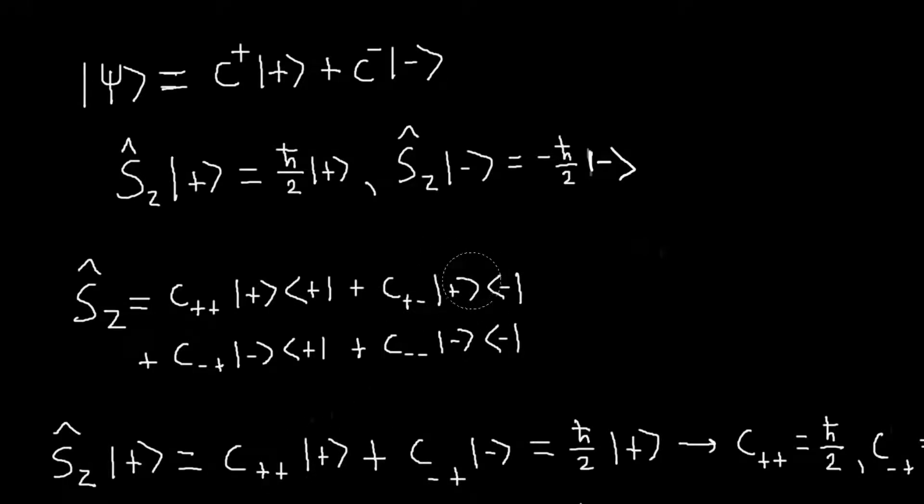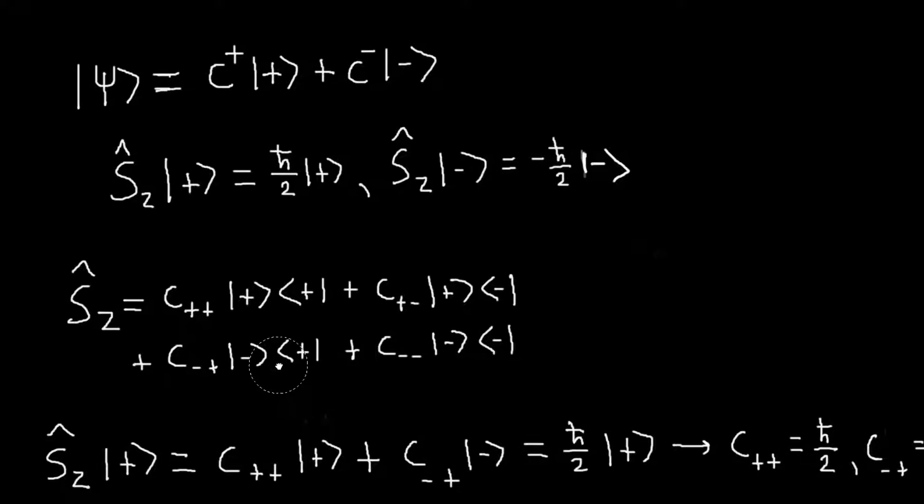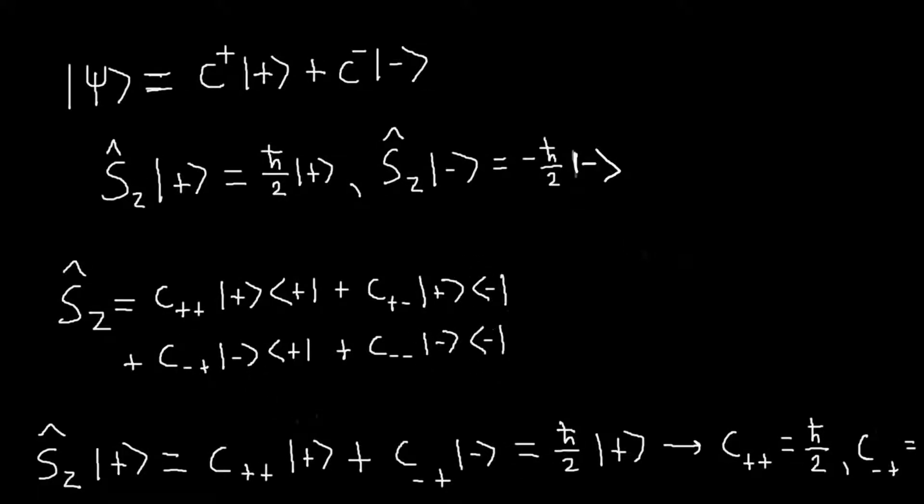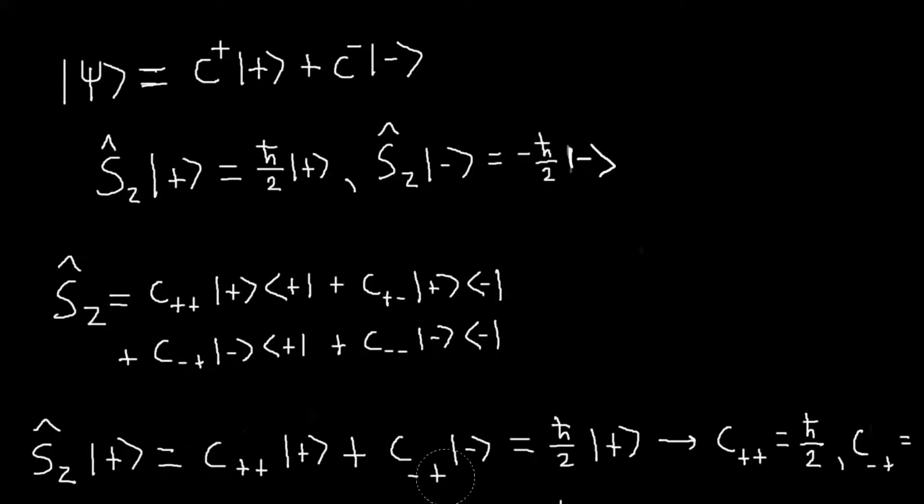Then I'll do this state, but I'll have a minus, an inner product of a minus with a plus, but they're orthogonal, so that's zero. And then I'll have this state, so I'll have a plus with a plus, which is one. And then I'll have C minus plus with a minus left over. And then similarly, as with this term, since I have a minus here, I'll have an inner product of minus and a plus, so that'll go away. So I'll just have these two terms.